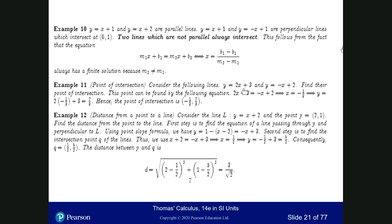Another example: y equals 2x plus 3 and y equals minus x plus 2. Their slopes are not equal, so they intersect. Equating them: 3x equals minus 1, so x equals minus 1 over 3. Then y equals 2 times minus 1 over 3 plus 3, that's 7 over 3. So the point of intersection is (minus 1 over 3, 7 over 3).